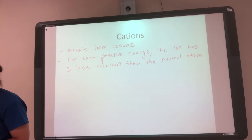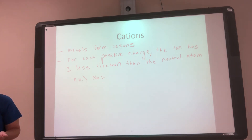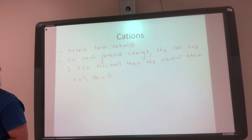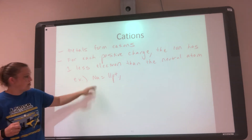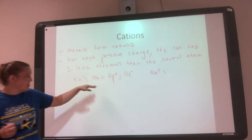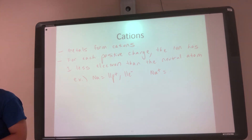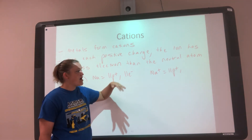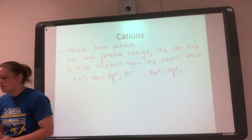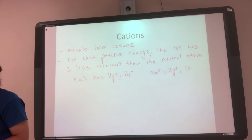For example, Na is sodium. Looking it up on the periodic table, its atomic number is 11, so it has 11 protons, and written neutral it has 11 electrons. But if I write Na⁺, it's still sodium so same number of protons, but since it has a positive charge it has one fewer electron — instead of 11 electrons it has 10 electrons.